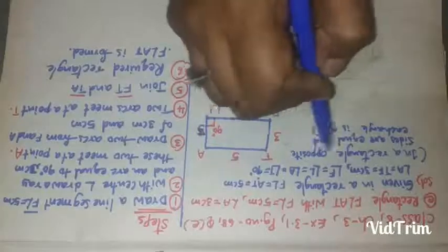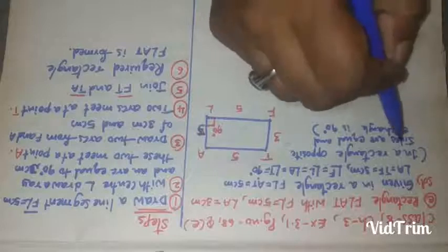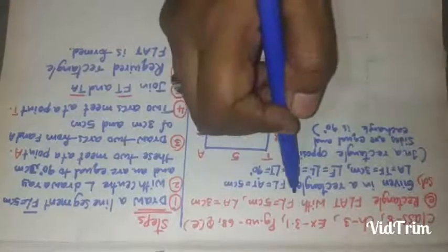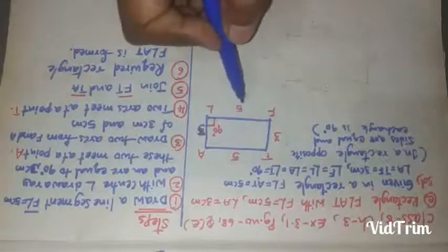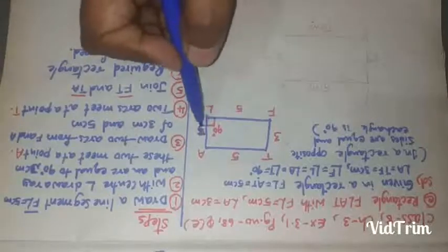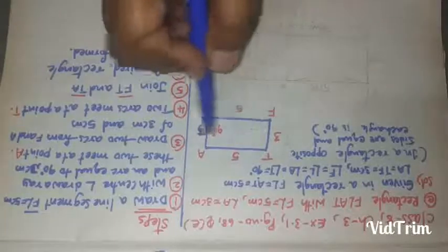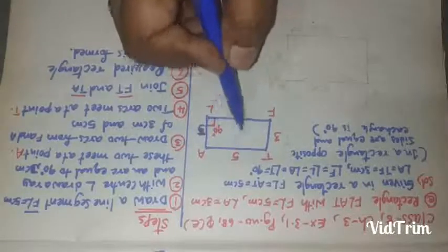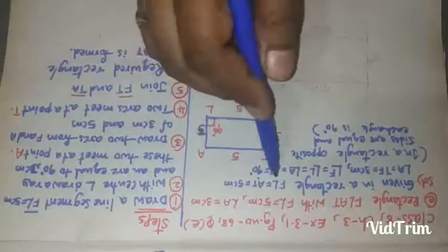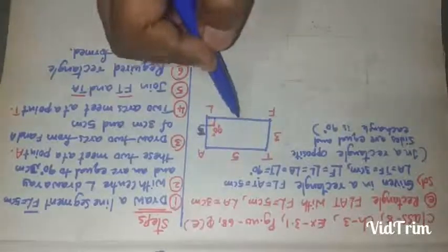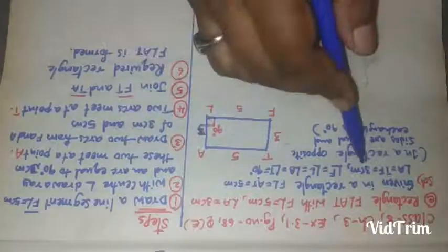Already we know in a rectangle, opposite sides are equal and each angle is 90 degrees. If we draw FL, FL is the length of 5 centimeters. According to the definition of a rectangle, opposite sides are equal, so FL and AT both are equal to 5 centimeters.